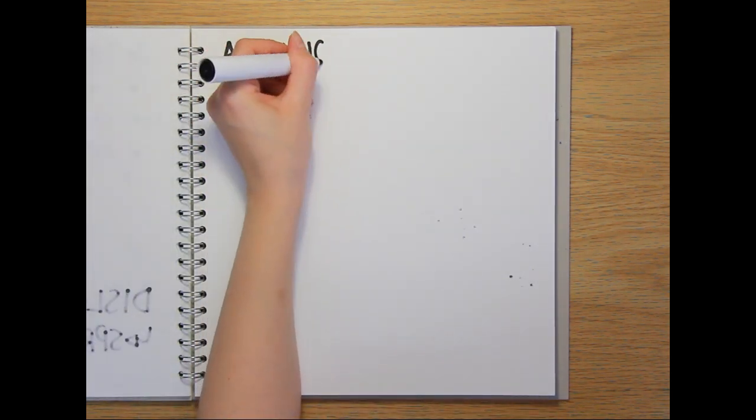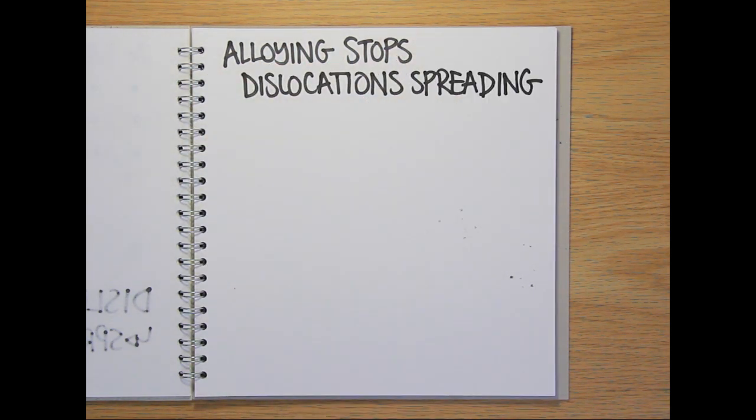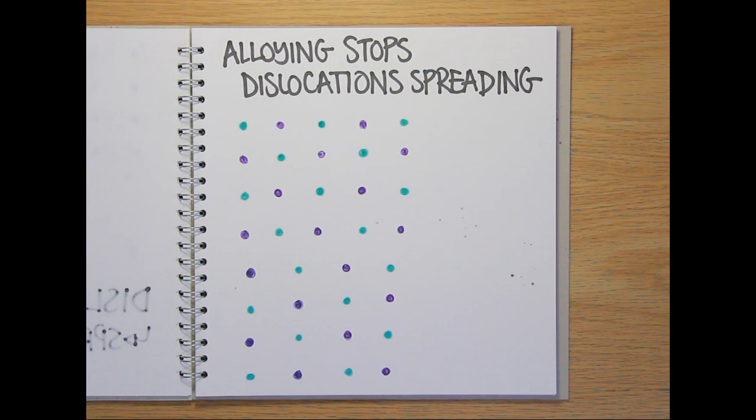Alloying can stop this dislocation from spreading, making an alloy harder than the metal on its own. Let's look at the lattice structure of an alloy where some of the base metal atoms have been replaced with atoms from the added element, known as the solute.